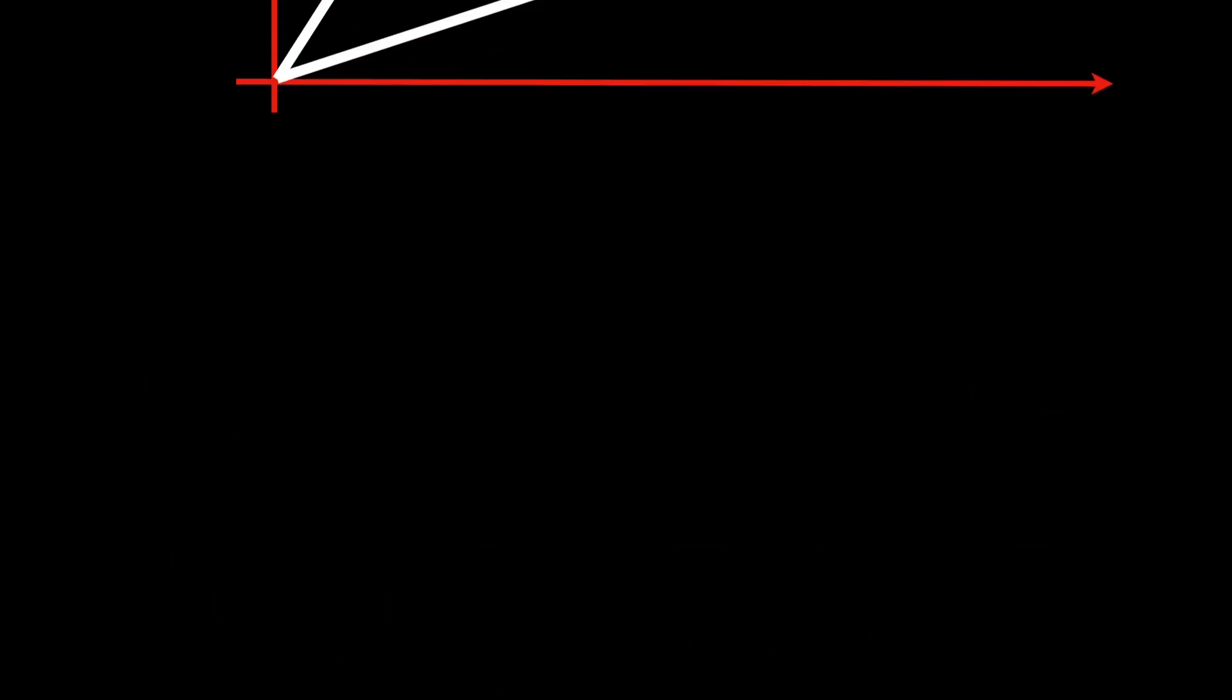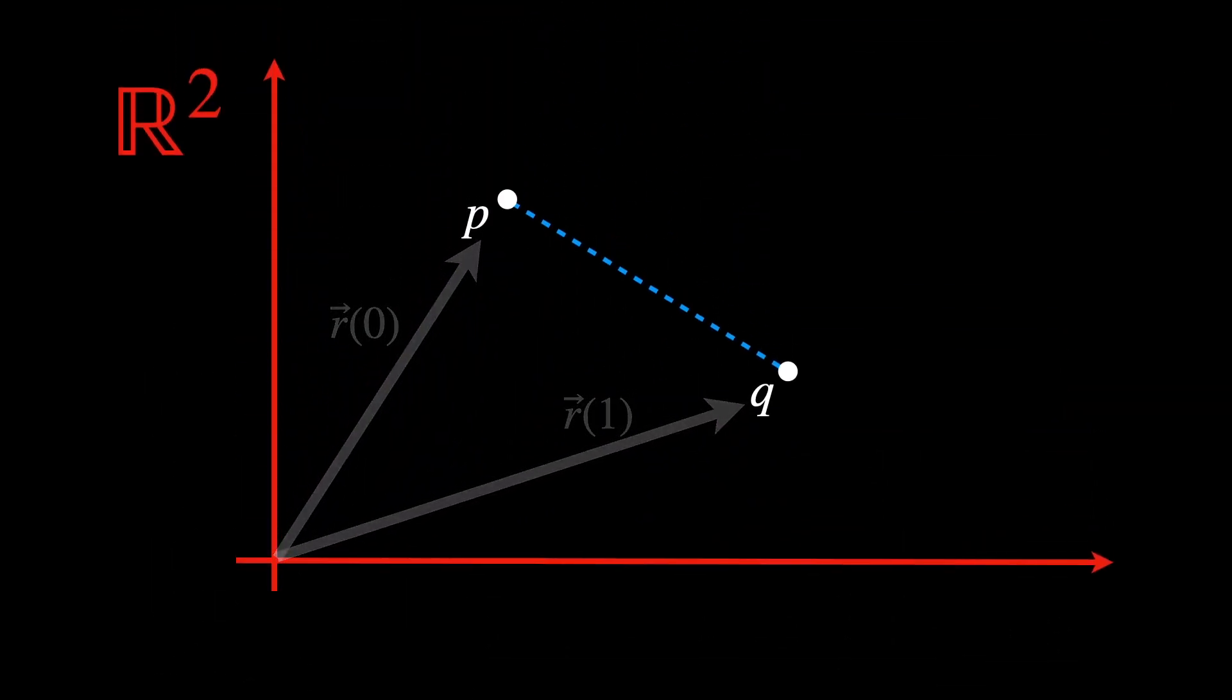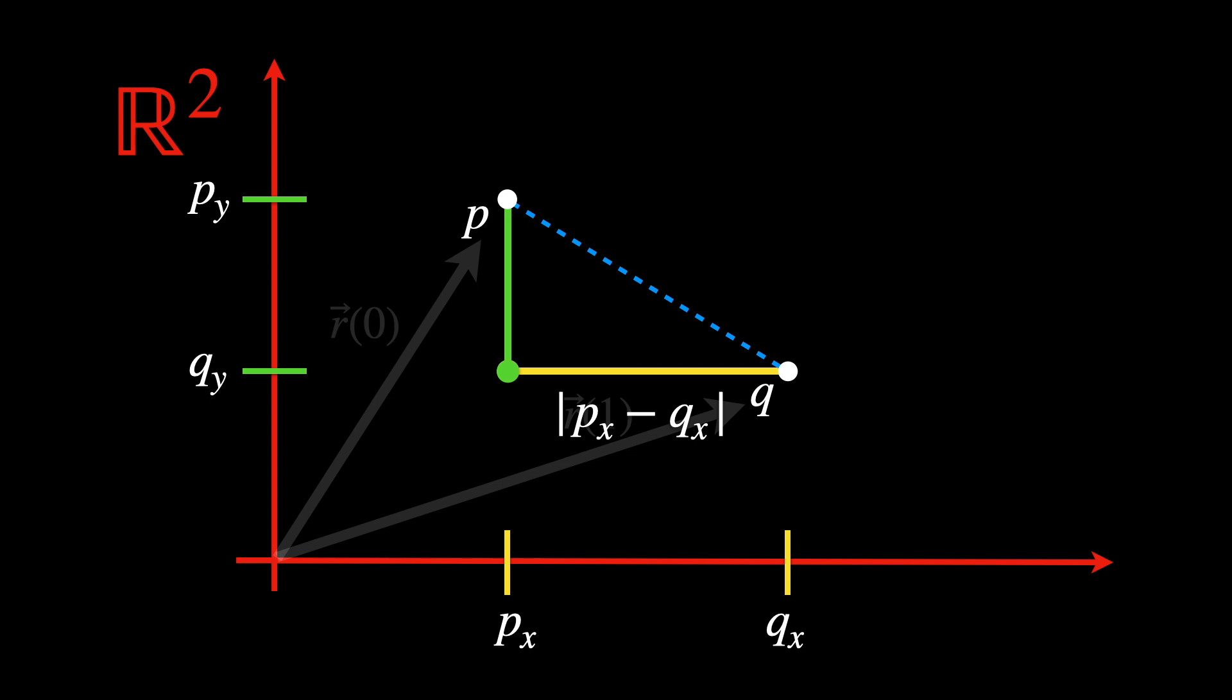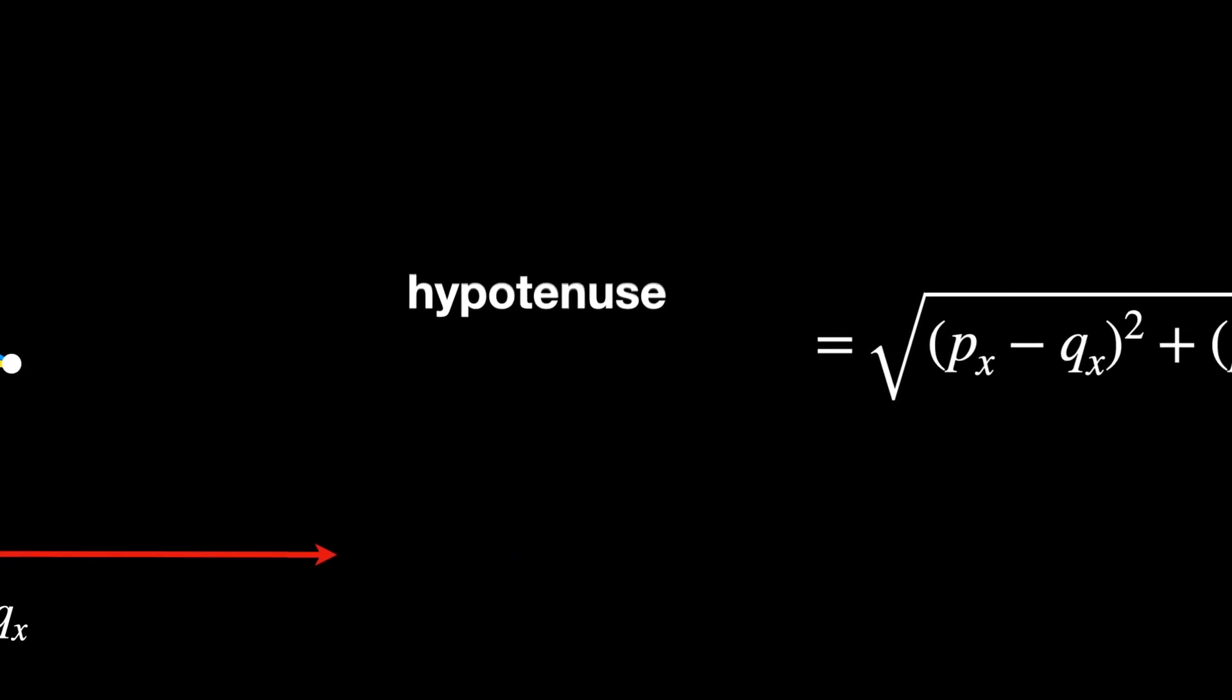To visualize what we're doing, let's go back to our Cartesian plane. Draw a horizontal line from Px to Qx. This line segment represents the difference in the x-coordinates of the two points, and measures as |Px - Qx|. Draw a vertical line from Py to Qy. This line segment represents the difference in the y-coordinates of the two points, and measures as |Qy - Py|. And that is how we find the hypotenuse, or the distance between P and Q. Again, found through this equation.